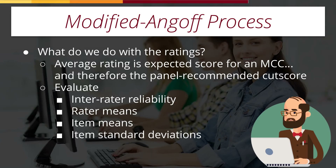What do you do with these ratings once you have them? The easiest thing to do is calculate the average rating, which is going to be the expected score for an MCC — the average percent correct that the panel of subject matter experts expects a minimally competent candidate to get correct on this test. That is the panel-recommended cut score. You can also look at these ratings to evaluate inter-rater reliability. You can look at rater means, item means, and item standard deviations. For example, you might find that rater 3 has a really high average while rater 7 has a really low average, meaning rater 3 has high expectations of examinees while rater 7 has lower expectations, effectively setting a lower cut score.